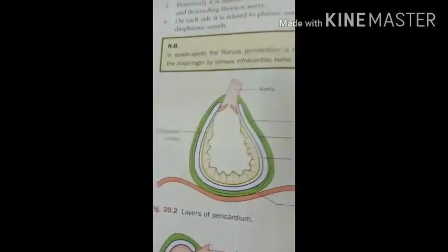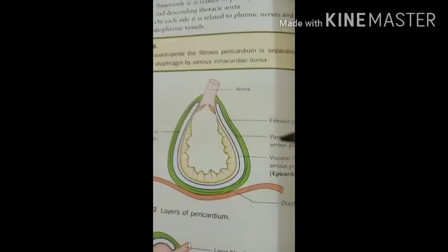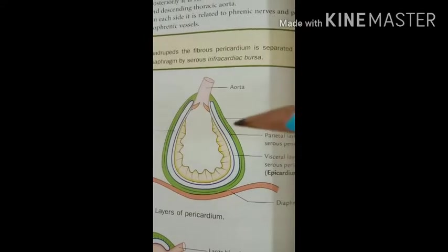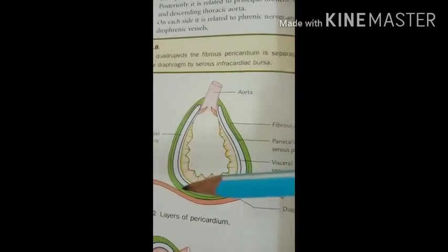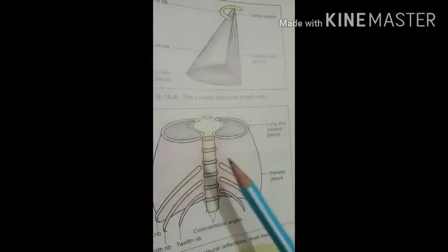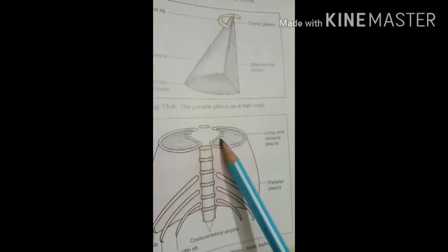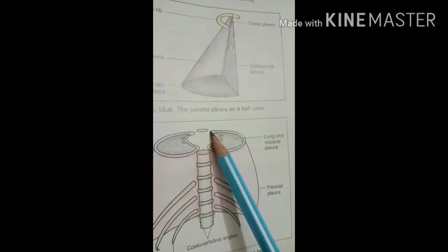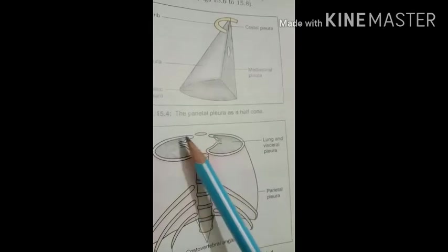The location of the pericardium is in the middle mediastinum. In this diagram you can see both sides have the two lungs, and between them the mediastinum is present. The pericardium is located within that mediastinal cavity.